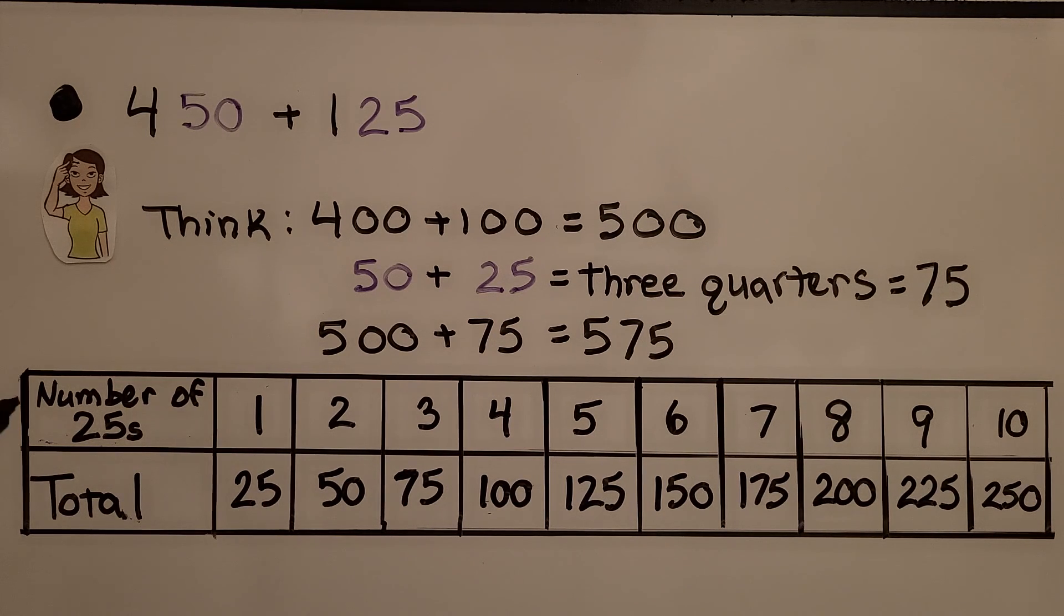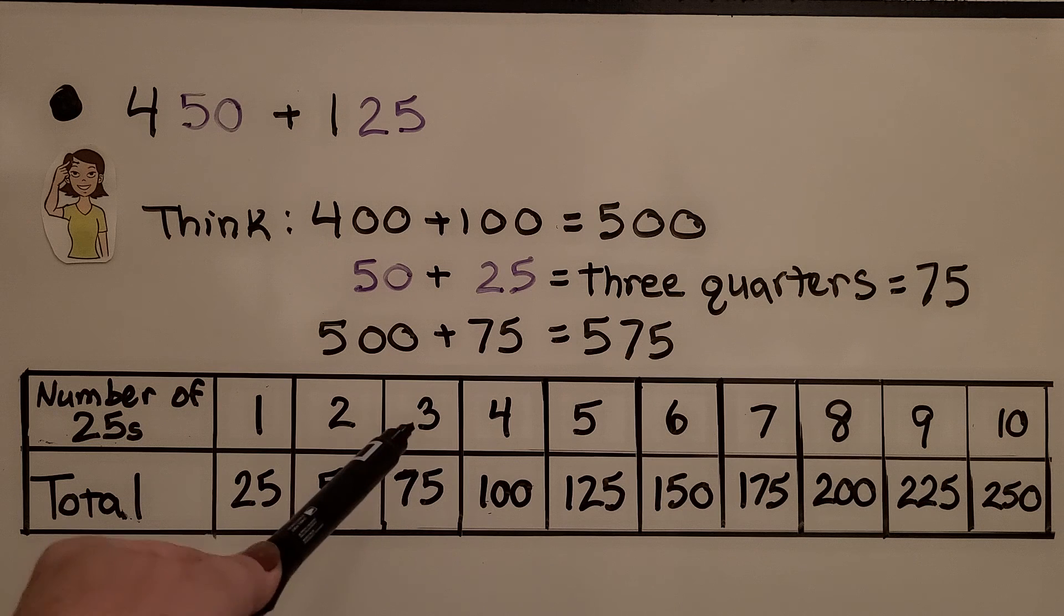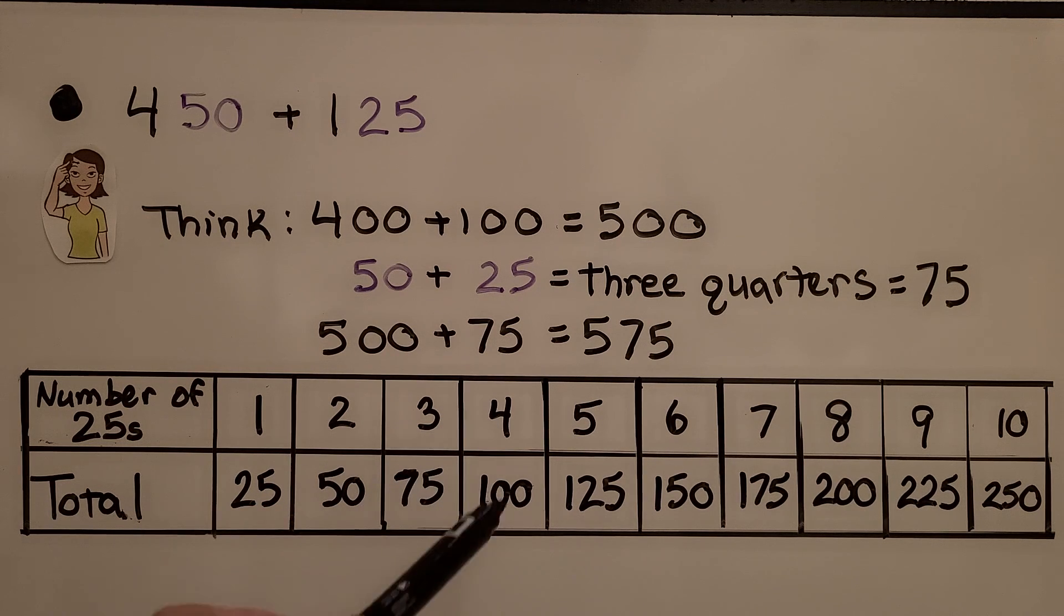The number of 25's, like the number of quarters, is going to tell us the multiples of 25. We have 1, that's 25. 2 is 50. 3 is 75. 4 is 100. And we just keep adding 25.